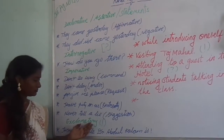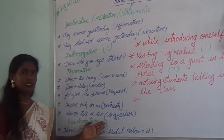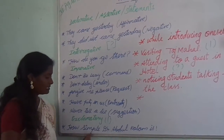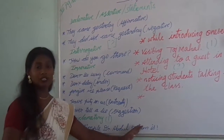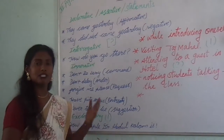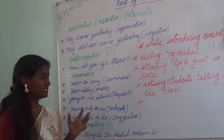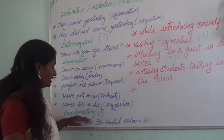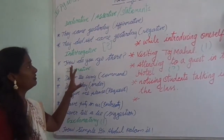Then exclamatory — we have all the emotional statements here. For example, 'How simple Dr. Abdul Kalam is!' He is such a person with a simple character. So it is a kind of exclamatory sentence.